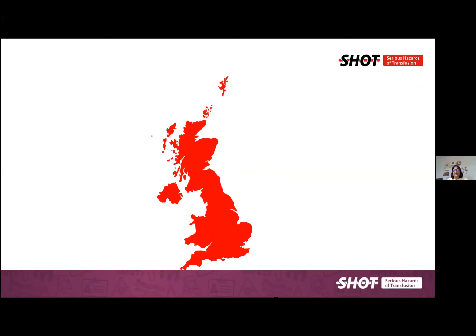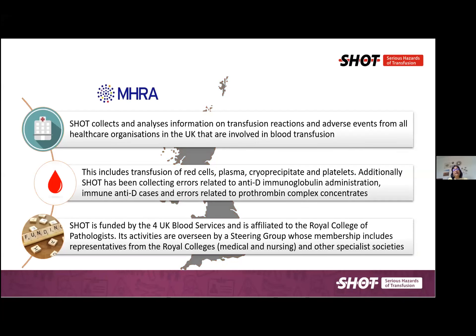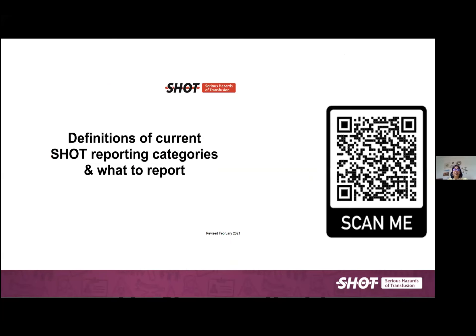SHOT is the UK Hemovigilance Scheme, and we work collaboratively with the MHRA. Whether transfusions happen in a transplant or non-transplant setting, any reactions or errors are reportable to SHOT. We are funded by the four UK blood services. There is a definitions document — scanning this QR code will take you to the latest version with reporting categories aligned with International Society of Blood Transfusion guidelines, which we review on an annual basis.